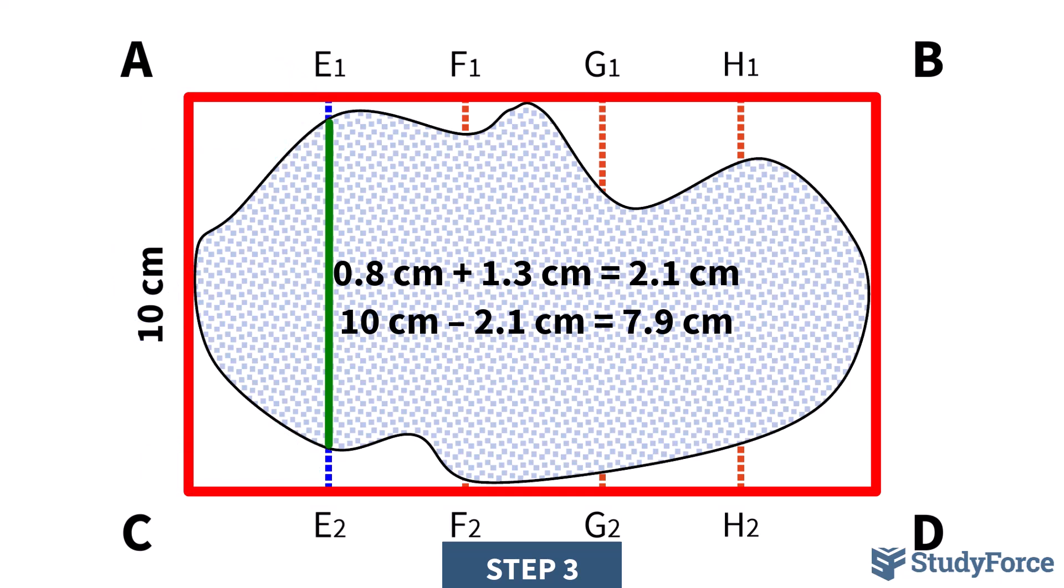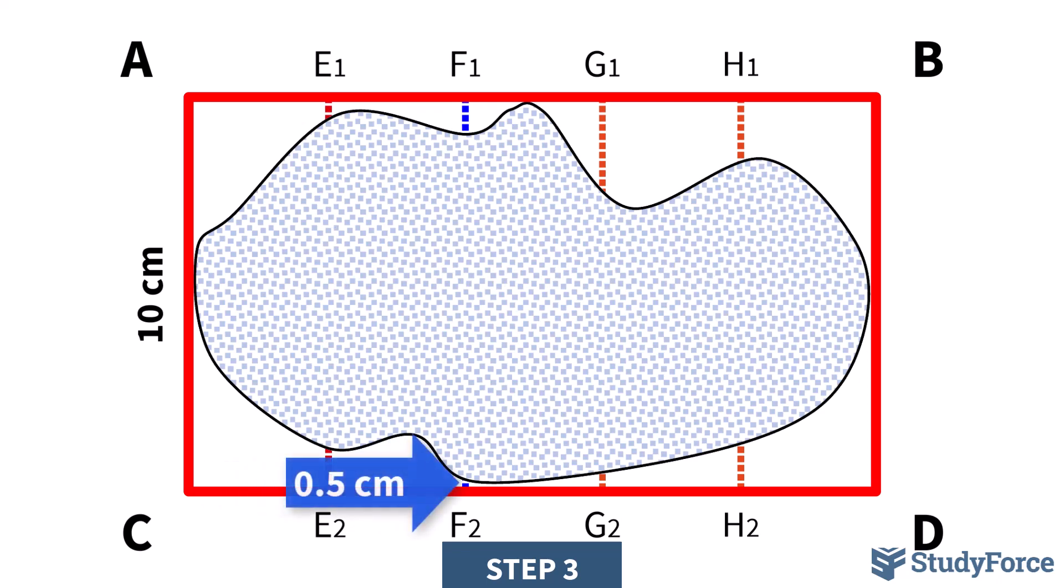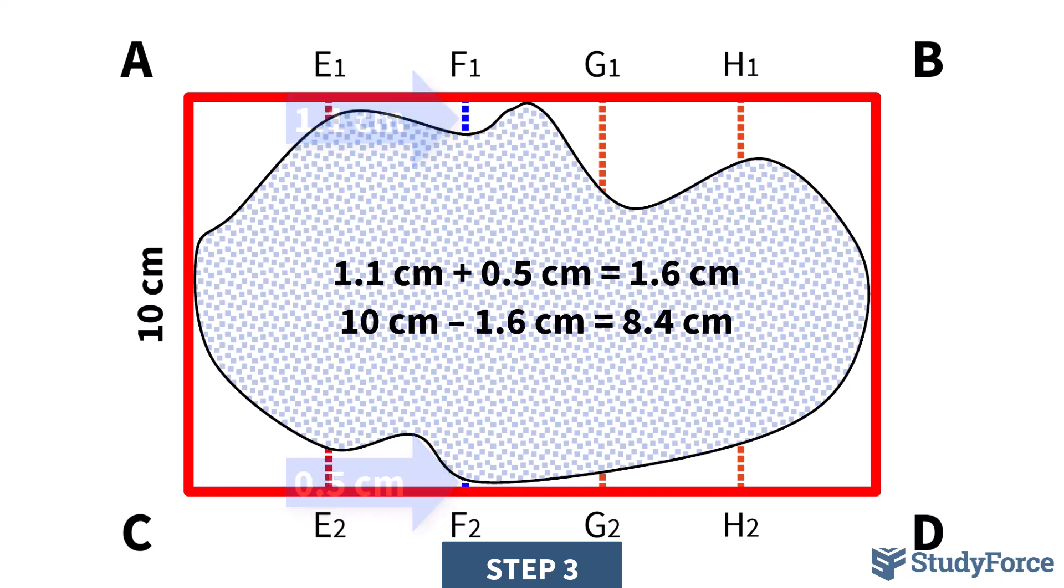Let's do another one so you understand it better. This part measures 0.5 centimeters, and this part measures 1.1 centimeters. Together, they add up to 1.6 centimeters. Subtracting this value from 10 centimeters, or the width of the rectangle, indirectly gives us the length of the offset line that would otherwise traverse the shape, had it not been for those physical constraints.